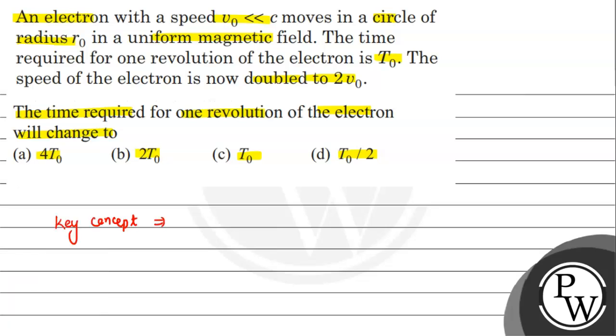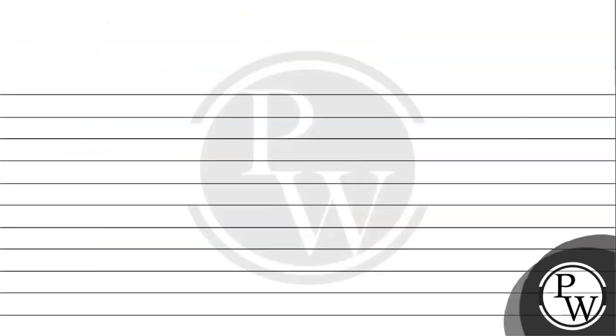The key concepts: radius of a charged particle in a uniform magnetic field is r = mv/(qB), and the time period formula T = 2πr/v. For the initial radius, r0 = mv0/(eB).